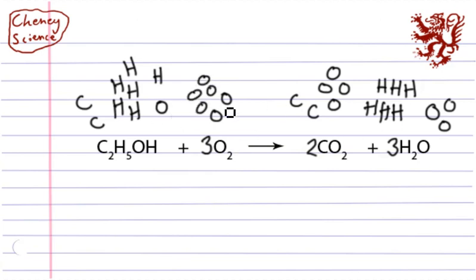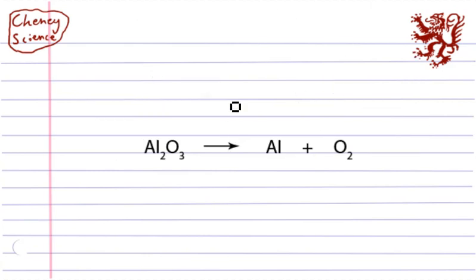On to the third one—aluminium oxide. This would be an electrolysis reaction being broken down into aluminium and oxygen. Pause now if you want to give it a go. I'll go through this. So we've got two aluminiums and three oxygens in aluminium oxide, just one aluminium there, and two oxygens here.